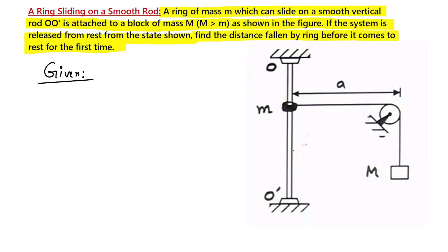So what are the things that are given? First, mass m, capital mass M, and length A is given. It is also given that capital M is greater than small m.